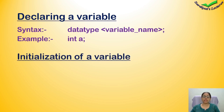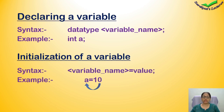Next is initializing a variable. Initialization means what value is going to be stored in the variable. The syntax is: write the variable name, equals, then the value. For example, we declared variable A, and now we put a value in it: A is equal to 10. The value on the right side is stored on the left.